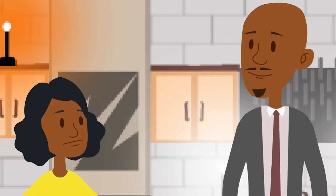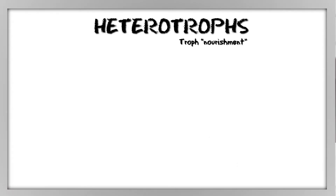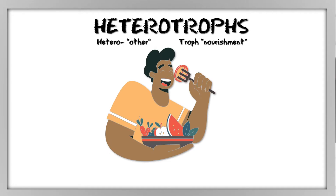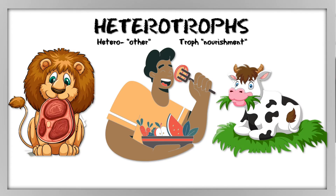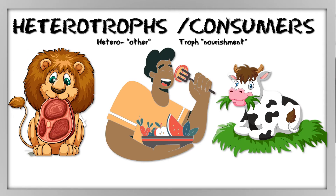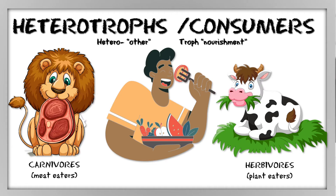We are called heterotrophs — this word literally means 'other nourishment.' This means that we have to get nourishment from other sources, which would be the food that we consume, and so do all other animals. We're all consumers. Some consumers only eat animals — they're called carnivores. Some consumers only eat plants — herbivores. And some eat both — omnivores.